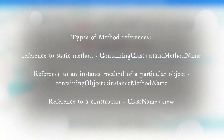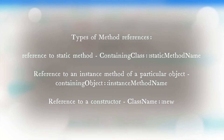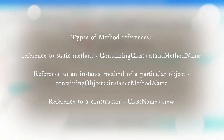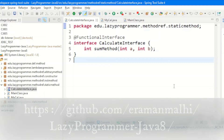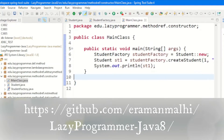The first type is reference to a static method — here we use the containing class name and the static method name. The second type is reference to an instance method of a particular object — here we use the object of that specific class and the instance method name. The last type is reference to a constructor — here we use the class name and the new keyword, where new points to the constructor, allowing us to create objects using the target value.